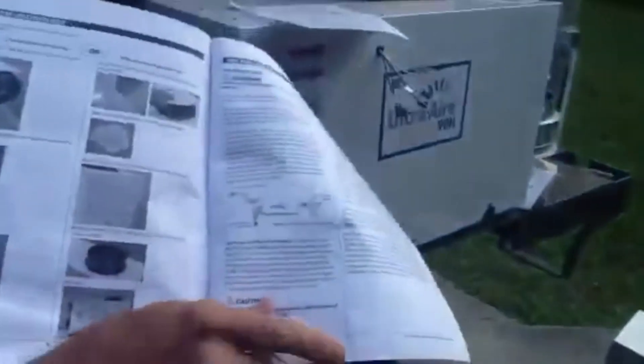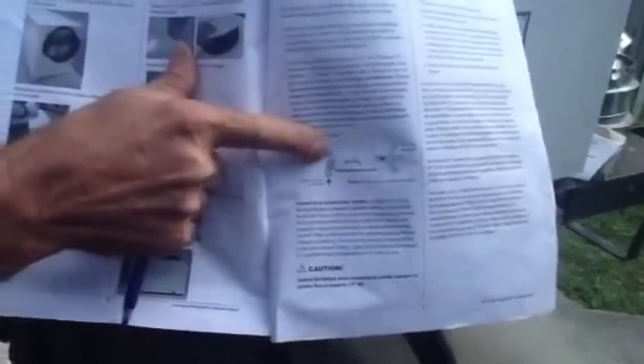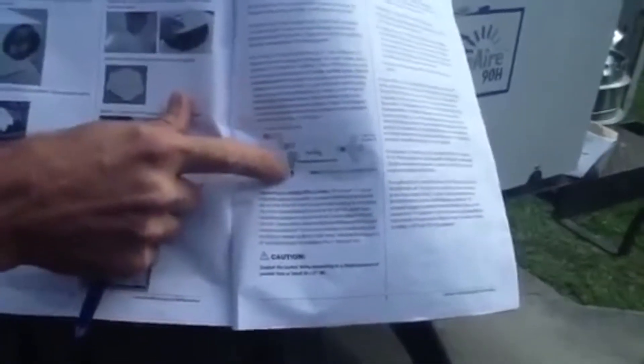Basically, what we're going to do here is we're going to use this particular formula right here. We're going to bring in a 10 inch flex from the main return off the air handler. Then we're going to come off with another 10 inch piece of flex, and we're going to come off with two pieces of eight.